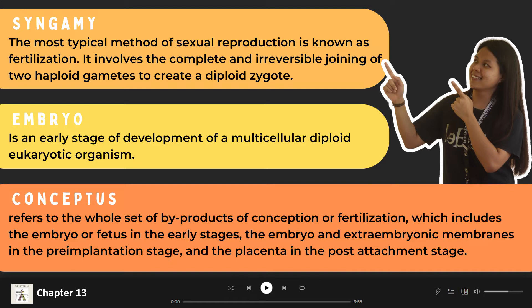After syngamy, the zygote becomes an embryo. Embryo is an early stage of development of a multicellular diploid eukaryotic organism. In general, it is the organism that reproduces sexually and develops from a zygote, which is a single cell resulting from the fertilization of the female egg cell by the male sperm cell. The zygote possesses half the DNA from each of its two parents.